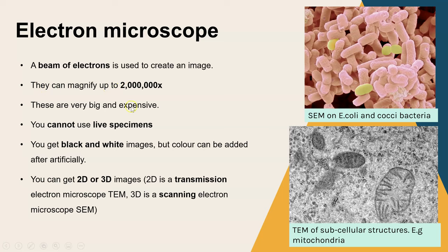Electron microscopes are very big, expensive, and much more complicated to use. You can't use live specimens on these microscopes because you have to have a vacuum for the microscope to work, and a vacuum is when you've removed all of the air — so you couldn't have anything living in that. The images produced are always black and white, though you can artificially colour the image in Photoshop, for example, which is what we can see in the diagram above — they've put colours onto that black and white image.